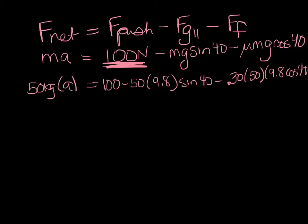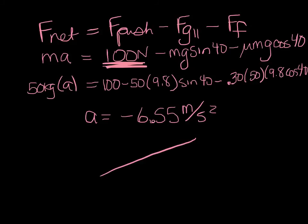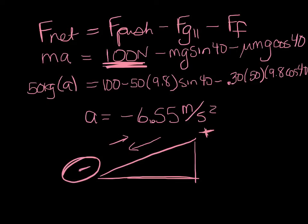We end up with an acceleration of negative 6.55 meters per second squared. What does that mean? Remember we said negative was down the ramp and positive was up? Our box is actually sliding down — we're trying to push it up, but it's sliding down and running into us, because down was the negative direction. So our box is basically still sliding down the ramp, and we have a bit of a problem. We need to go to a new setup.